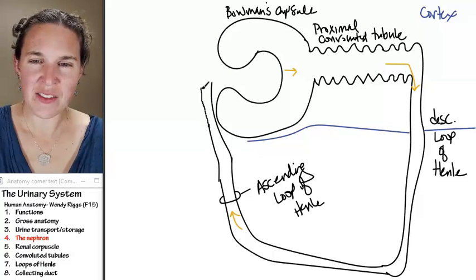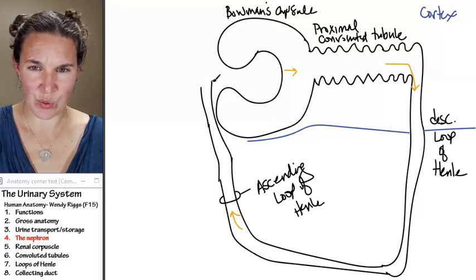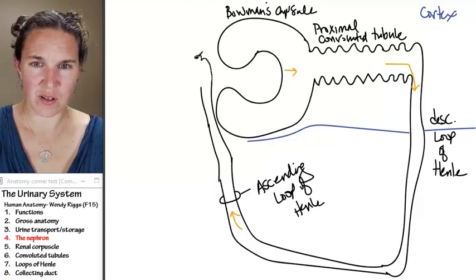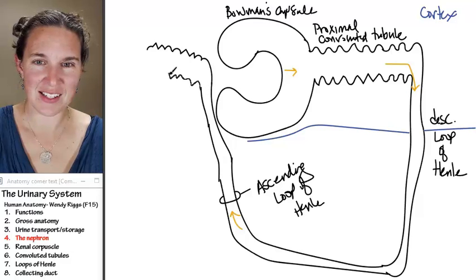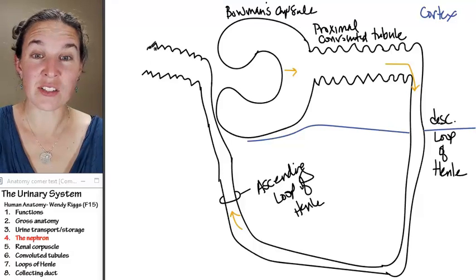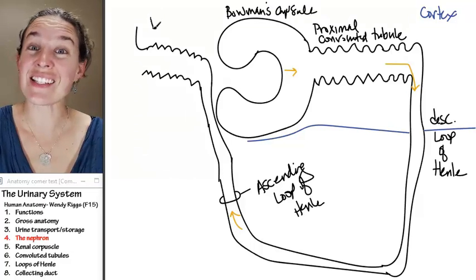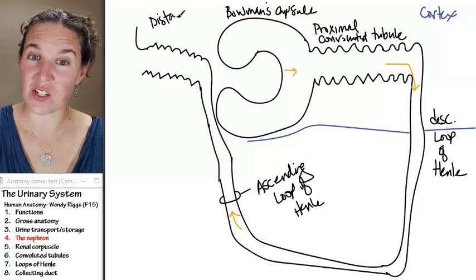We have another, like, zone that looks like this. What do you think this is? It's another convoluted tubule. This is the distal convoluted tubule.